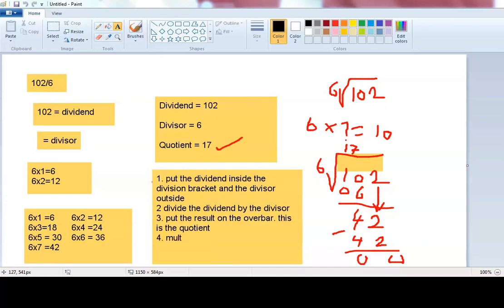Then you multiply. You multiply the quotient by the divisor. The quotient is 1, the divisor is 6. 1 multiplied by 6 is 6.